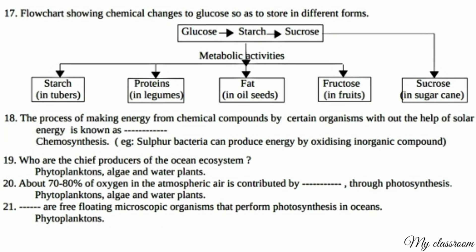Who are the chief producers of the ocean ecosystem? Phytoplanktons, algae, and water plants. About 70 to 80% of oxygen in the atmospheric air is contributed by phytoplanktons, algae, and water plants through photosynthesis. Phytoplanktons are free-floating microscopic organisms that perform photosynthesis in oceans.